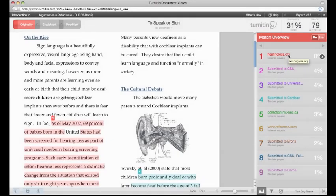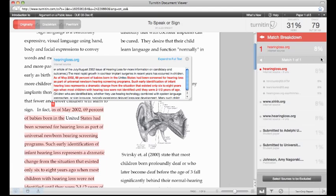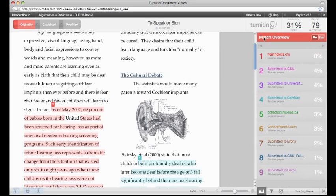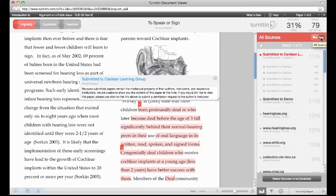When instructors click the source in the list, the match breakdown opens and illustrates all of the sources within the Turnitin databases that matched the essay's text. The match breakdown is available for all sources by changing the view to the all-source view for the Originality Report.